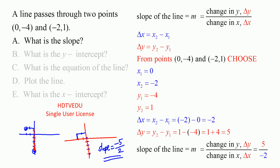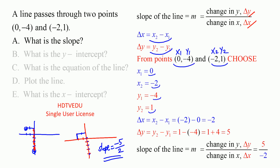Let us see if we get the same using our formula. The slope of the line is change in y over change in x: Δx is x2 minus x1, and Δy is y2 minus y1. We are given two points, so we should choose (x1, y1) and (x2, y2). It doesn't matter how you choose, but make sure it is an ordered pair.